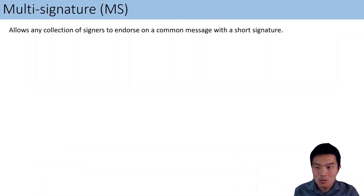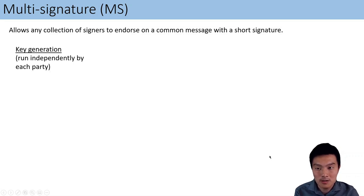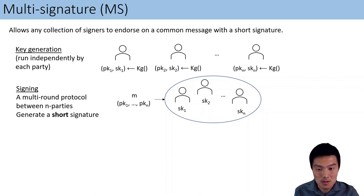So what are multisignatures? Multisignatures allow a collection of signers to endorse a common message with a short signature. We require each signer to be able to generate their keys independently by running a key generation algorithm. Signing is a multi-round protocol between any number of n parties. They take as input the message to be signed, as well as a vector of public keys denoting the participants. At the end, they should return a short signature sigma.